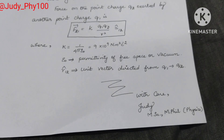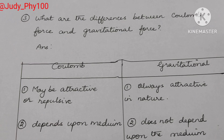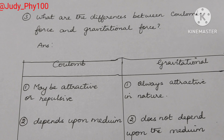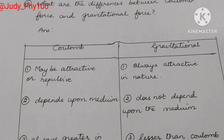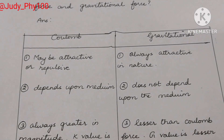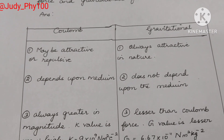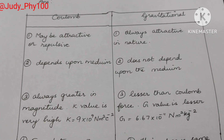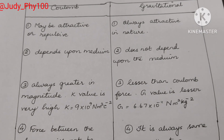Epsilon naught is the permittivity of free space or vacuum, and r-cap is the unit vector indicating direction. Third question: what are the differences between Coulomb's force and gravitational force? Coulomb's force is the force between charges; gravitational force is the force between the Earth and objects. First difference: Coulomb's force may be attractive or repulsive — like forces repel, unlike forces attract — whereas gravitational force is always attractive in nature. Second difference: Coulomb's force depends upon the medium; gravitational force does not depend upon the medium.